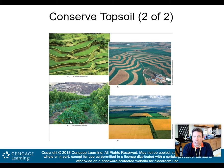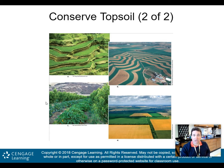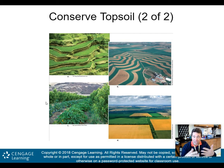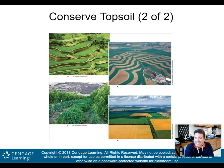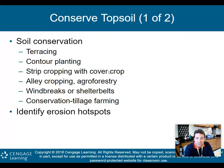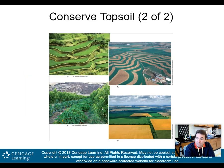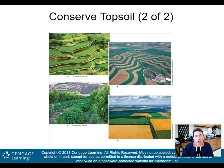The next method is intercropping, which is very important for conserving topsoil. In intercropping, you have rows of different crops side by side. It's not all the same crop — you put different types of crops in and around a farm. Some crops on the outside act as a natural windbreak, and some may have deeper root systems that help hold the soil in place.